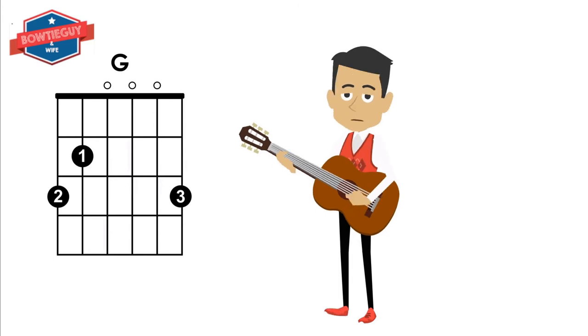The G chord requires you to put your pointer finger on the A string on the second fret. Your middle finger goes on the low E string on the third fret. And your ring finger goes on the high E string on the third fret. Let's see how it sounds.